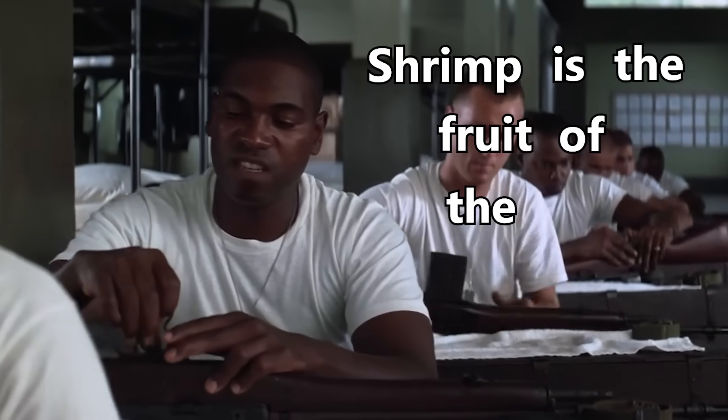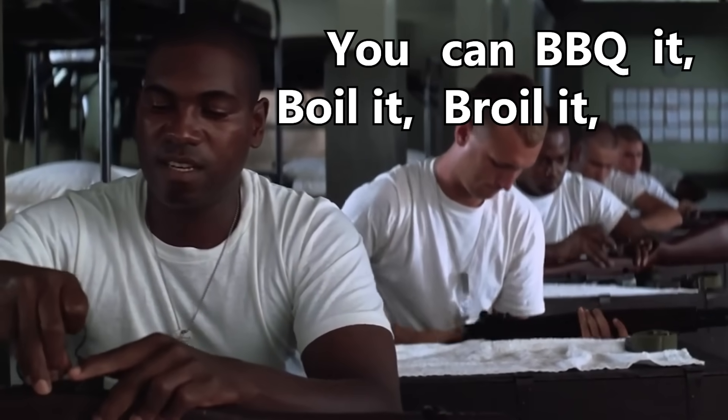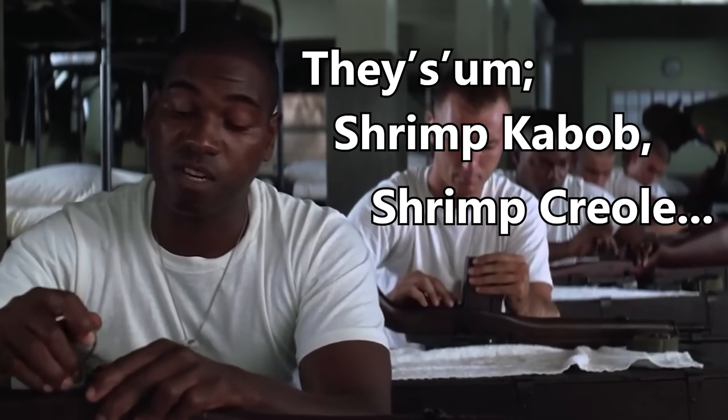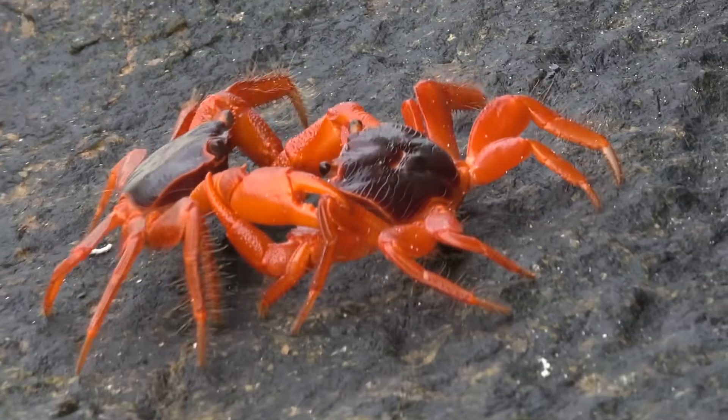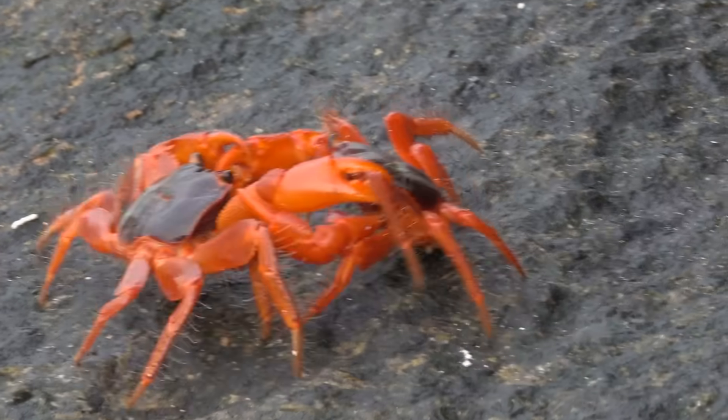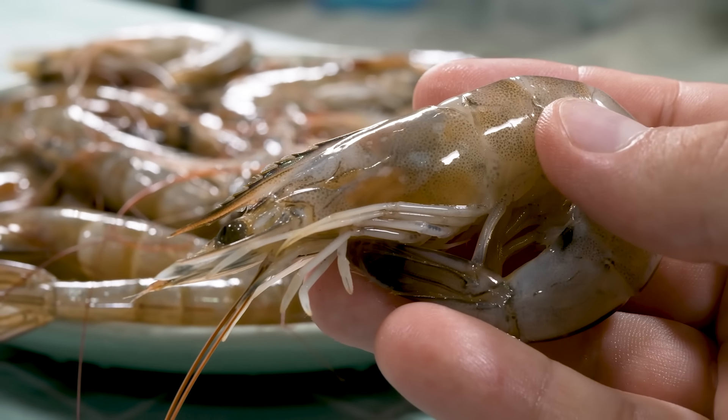Shrimp is the fruit of the sea. You can barbecue it, boil it, broil it, bake it, sauté it. There's shrimp kebabs, shrimp creole. Chitin is second only to cellulose as the most abundant biopolymer on earth. All the shrimp, crab, and lobster waste, for example, could theoretically be converted into usable chitosan.